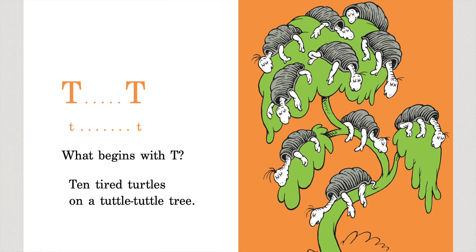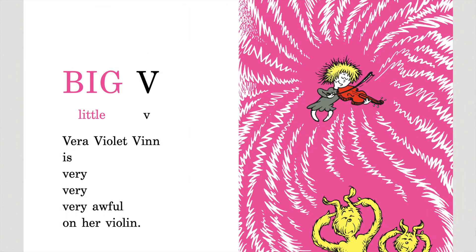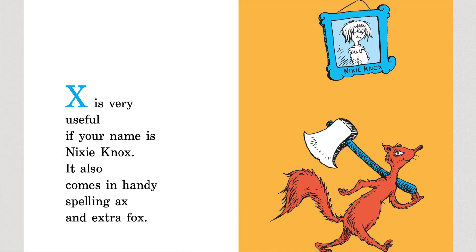T, T, T, T — what begins with T? Ten tired turtles on a tuttle-tuttle tree. Big U, little U — what begins with U? Uncle Ub's umbrella and his underwear, too. Big V, little V — Vera Violet Vinn is very, very, very awful on her violin. W, W, W, W — Willy Waterloo washes Warren Wiggins, who is washing Waldo Wu. X is very useful if your name is Nixie Knox. It also comes in handy spelling axe and extra fox.